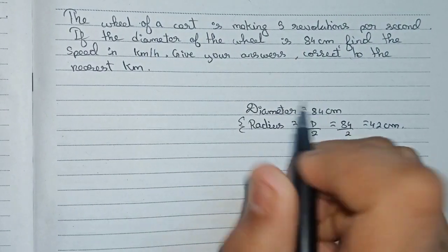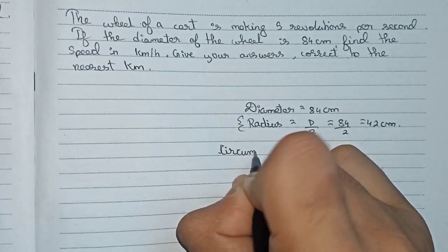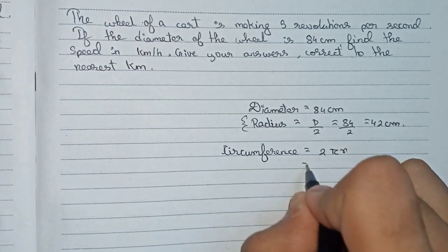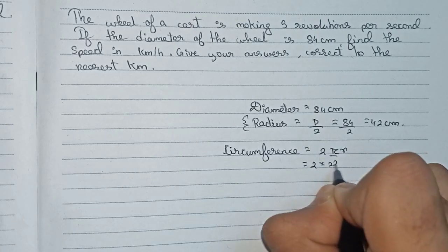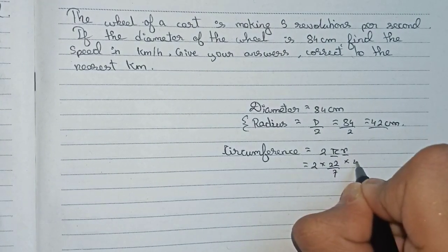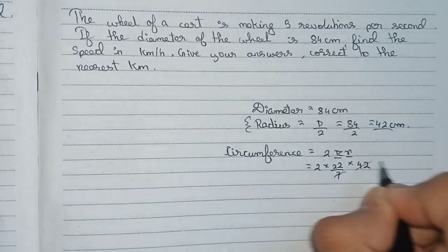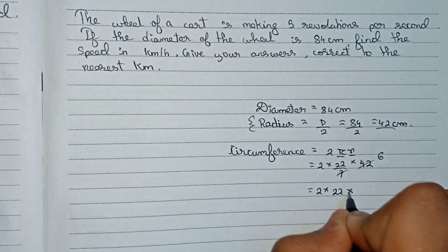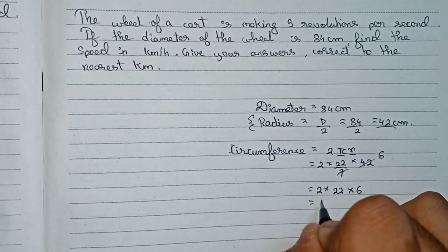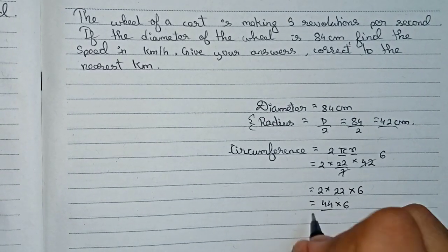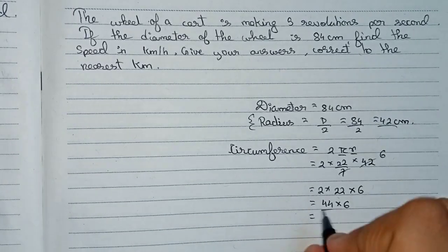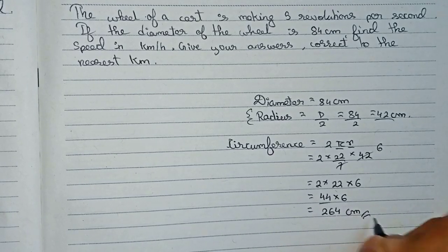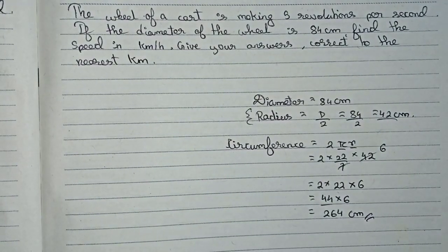From this radius we can find the circumference. Circumference is equal to 2πr, so 2 into 22/7 into 42. Simplifying: 42 divided by 7 gives 6, then 2 into 22 into 6, which is 44 into 6, giving us 264 centimeters as the circumference.